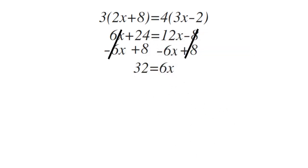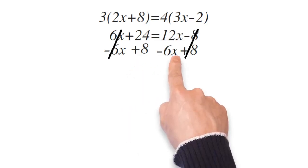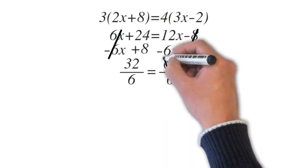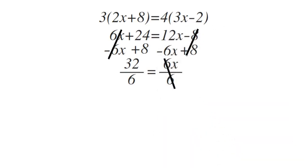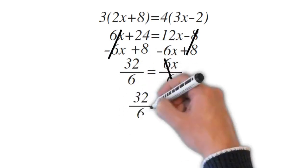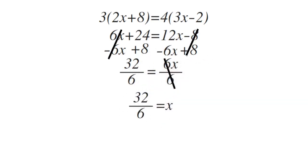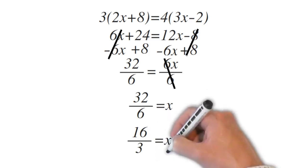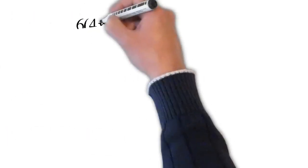Now we just need to divide both sides by 6, giving us 32 over 6 equals 6x over 6. The 6s cancel out each other, so we get 32 over 6 equals x, which simplifies to 16 over 3 equals x. Don't forget to simplify — 16 over 3 equals x, and then we're done.